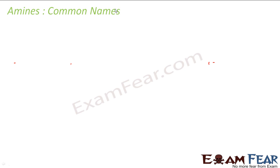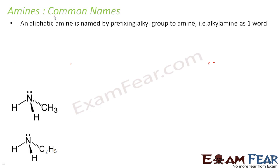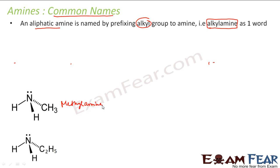We'll start with the common name — please note we are not trying to understand IUPAC name now, we are trying to understand the common name. For the common name of aliphatic amines, we just prefix the alkyl group to amine and use alkyl amine as one word. For example, there is a methyl group attached to amine, so we'll call this methylamine — that is the common name. If there's an ethyl group attached, we'll call it ethylamine.